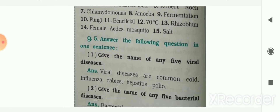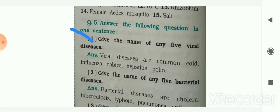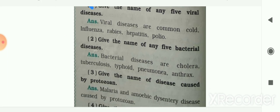Next section: answer the following questions in one sentence. First: give the names of any five viral diseases. Viral diseases are common cold, influenza, rabies, hepatitis, and polio.